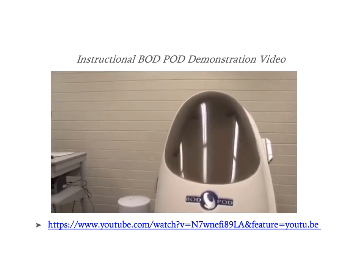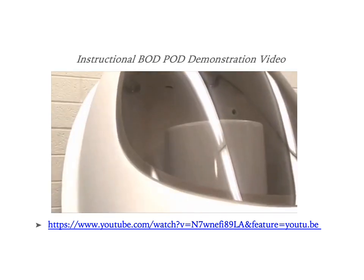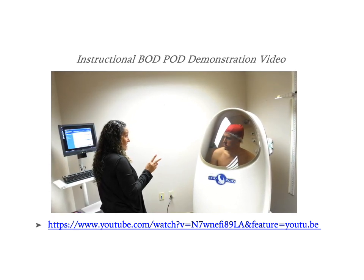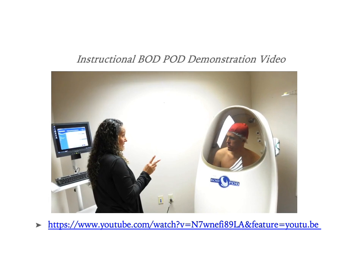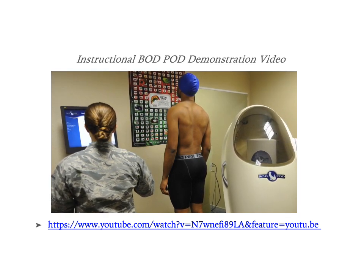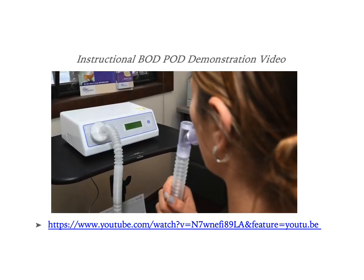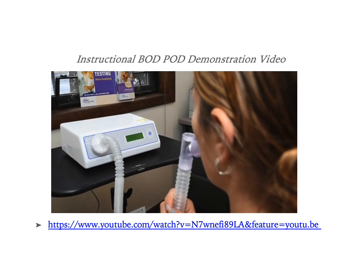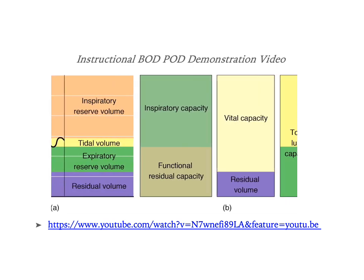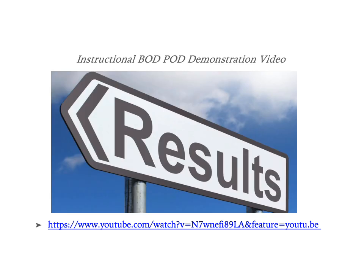Before starting the test, calibrations must be performed. First, the chamber is measured while empty and then with a 50-liter calibration cylinder inside. Two measurements are also done while the patient is inside to assure accuracy. If these measurements do not agree, a third measurement may be taken. Patients are asked to wear tight-fitting clothing or swimsuits as well as swim caps over their hair to minimize air getting trapped. Thoracic gas volume is determined by having the patient breathe into a tube and recording pressure changes — the average volume of air in the lungs during tidal breathing — allowing for more accurate results.